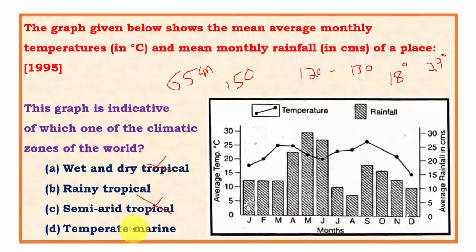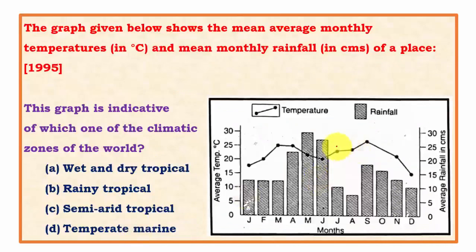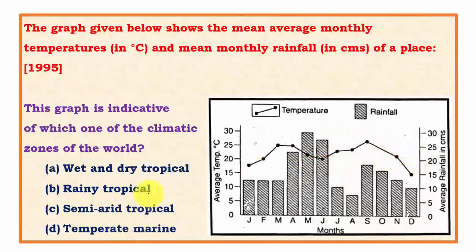Temperate marine, which is the British type, usually doesn't have temperatures above 20 degrees Celsius. But the graph shows most months with temperatures above 20 degrees Celsius, so this option is also wrong. The clear answer is tropical rainy type or equatorial rainforest type of climatic region - Option B.